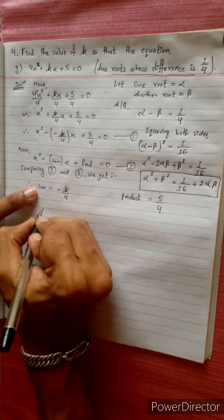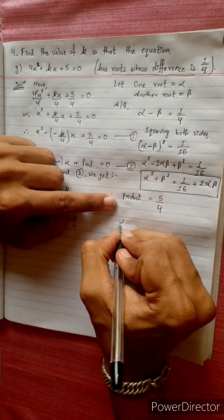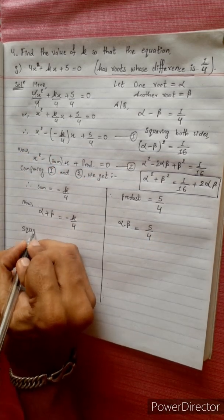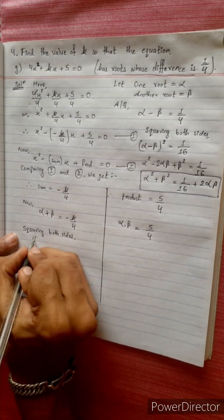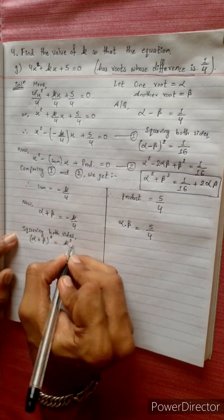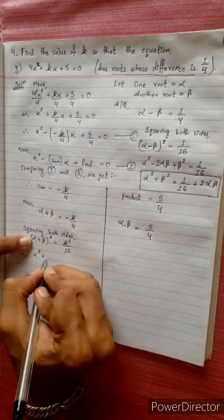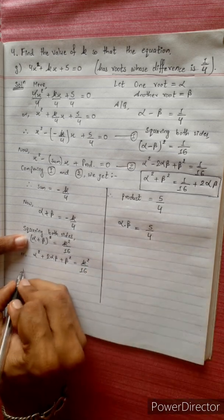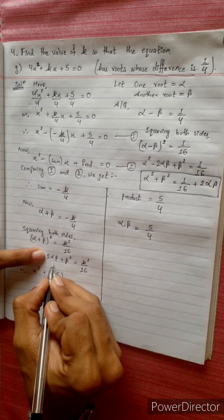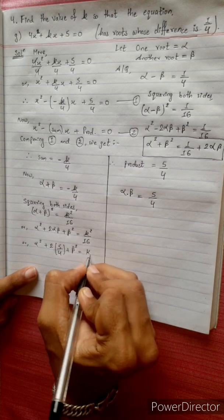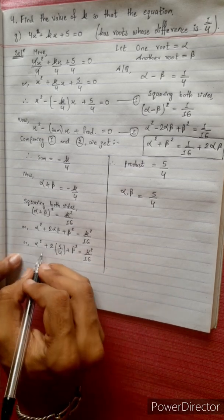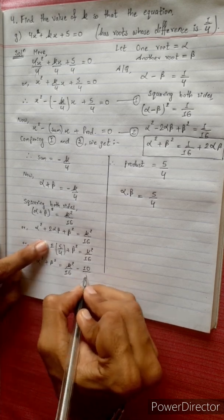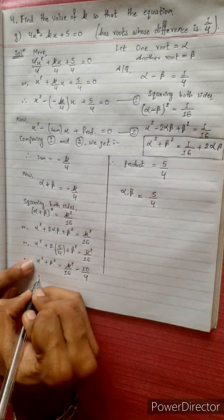Now the sum of roots is alpha plus beta equals minus k by 4, and the product of roots is alpha times beta equals 5 by 4. Let's try squaring both sides of the sum: (alpha plus beta)² equals k² by 16. Expanding: alpha squared plus 2 alpha beta plus beta squared equals k² by 16. Since alpha times beta equals 5 by 4, we get alpha squared plus 2 times 5 by 4 plus beta squared equals k² by 16.